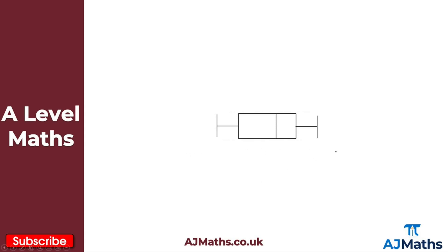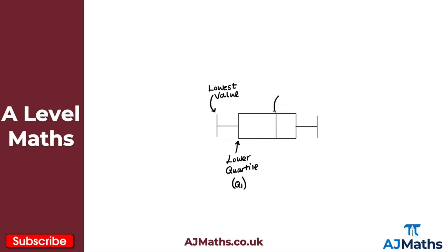What I've got on the screen is an example of a box plot, and I'm going to label the key parts. At the beginning, this first line is the lowest value — the smallest value. This next line is the lower quartile, which we call Q1. The next line after that is the median, which we can also call Q2.